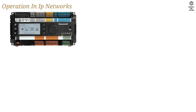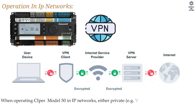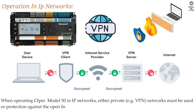Operation in IP networks: when operating Cyper Model 50 in IP networks, either private networks — for example VPN — must be used, or protection against the open internet, for example by means of external firewalls, must be ensured.